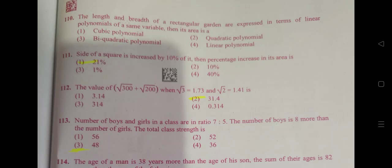The value of root 300 plus root 200, when root 3 is equal to 1.73 and root 2 is equal to 1.41, is 31.4.